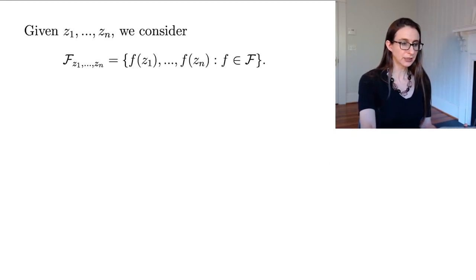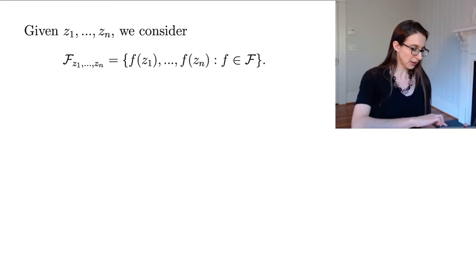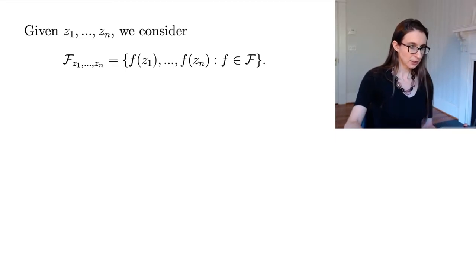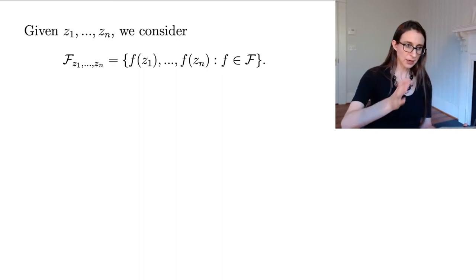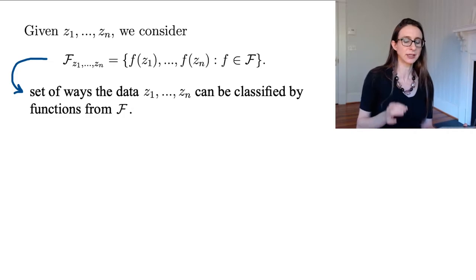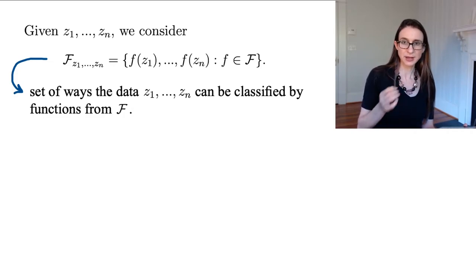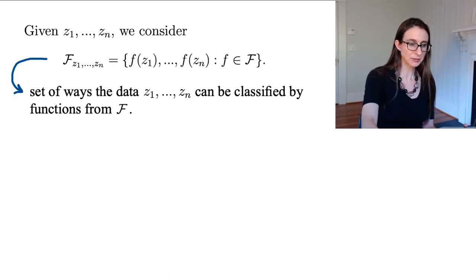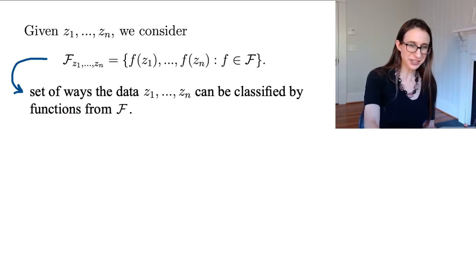I want to define F(Z1 to ZN): given Z1 to ZN, it's the set of ways the data can be classified by functions from F. That is finite — no matter if I have an infinite set of functions. That's the cool thing.